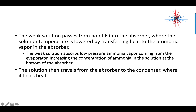As the weak solution passes from point six into the absorber, the solution temperature is lowered by transferring heat to the vapor in the absorber. The weak solution then absorbs the low-pressure ammonia vapor coming from the evaporator, increasing the concentration of ammonia in the solution at the bottom of the absorber. The solution then travels from the absorber to the condenser where it loses heat.